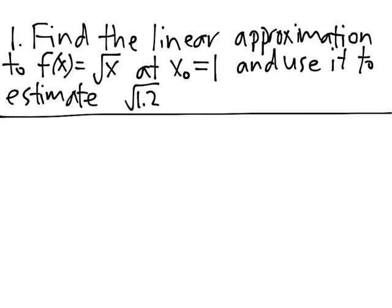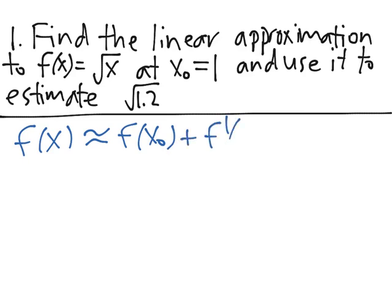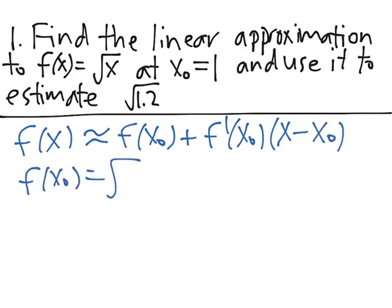The equation for the linear approximation is: f(x) ≈ f(x₀) + f′(x₀) · (x − x₀). We know that f(x₀) = √1 = 1.